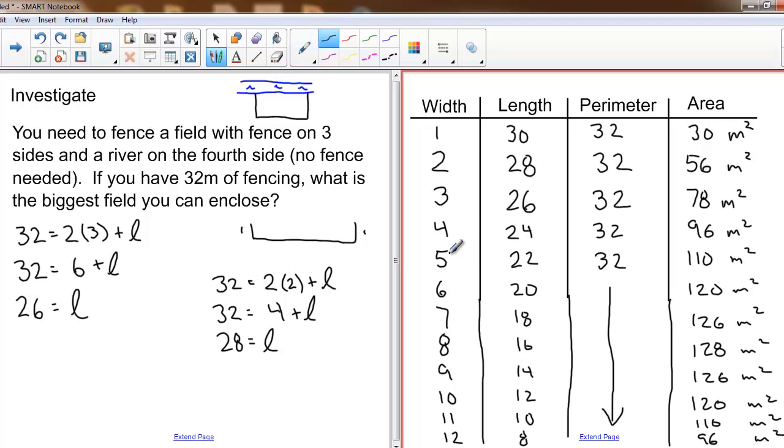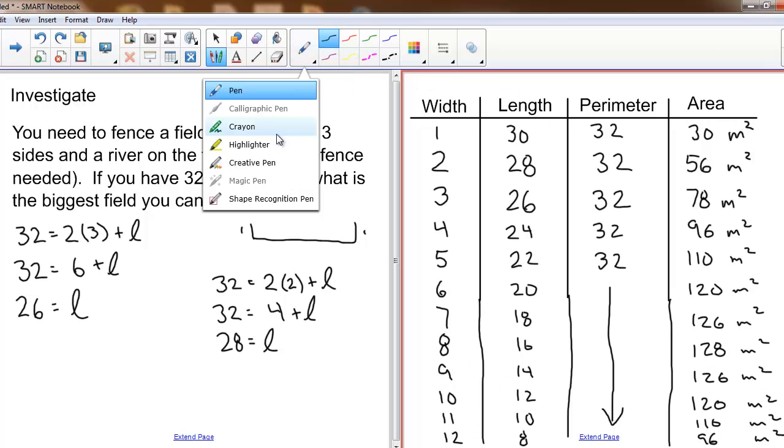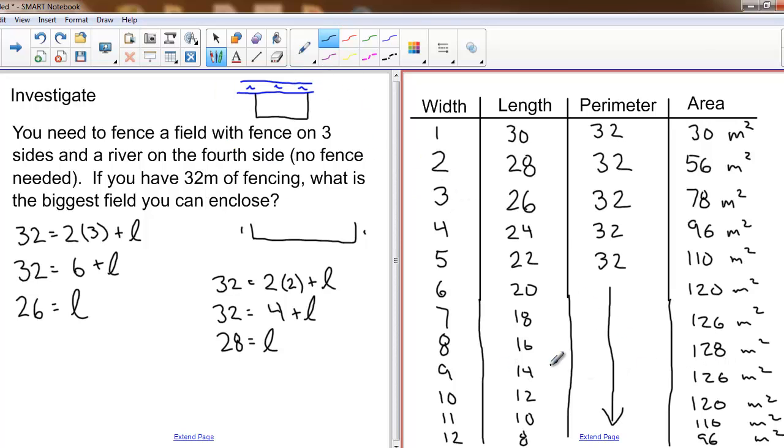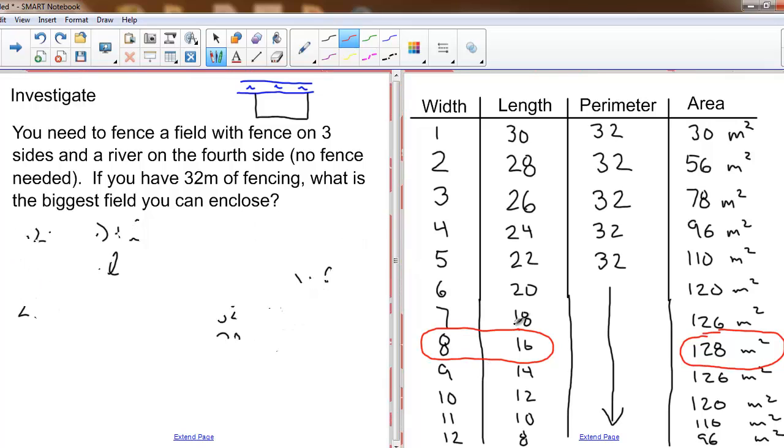Let's compare your table with mine. I've stopped around a width of 12 and a length of 8 because I've found my maximum area. My maximum area is 128 meters squared when the width is 8 and the length is 16. What do you notice about the length and the width in this scenario? What's the relationship between the length and the width? Do you notice that the length is double the width?